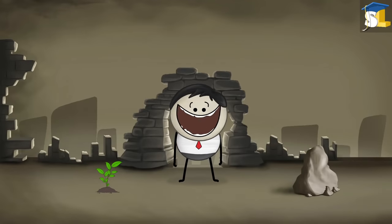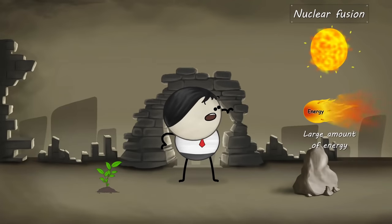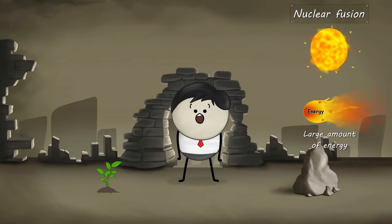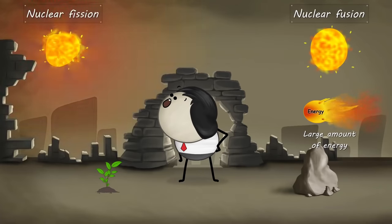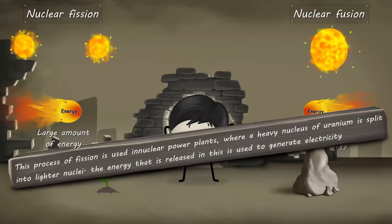As we already know, nuclear fusion is the fusion of two lighter nuclei with the release of a large amount of energy. The exact opposite process happens in nuclear fission. Here, a heavier nucleus splits into two lighter nuclei, releasing a large amount of energy.